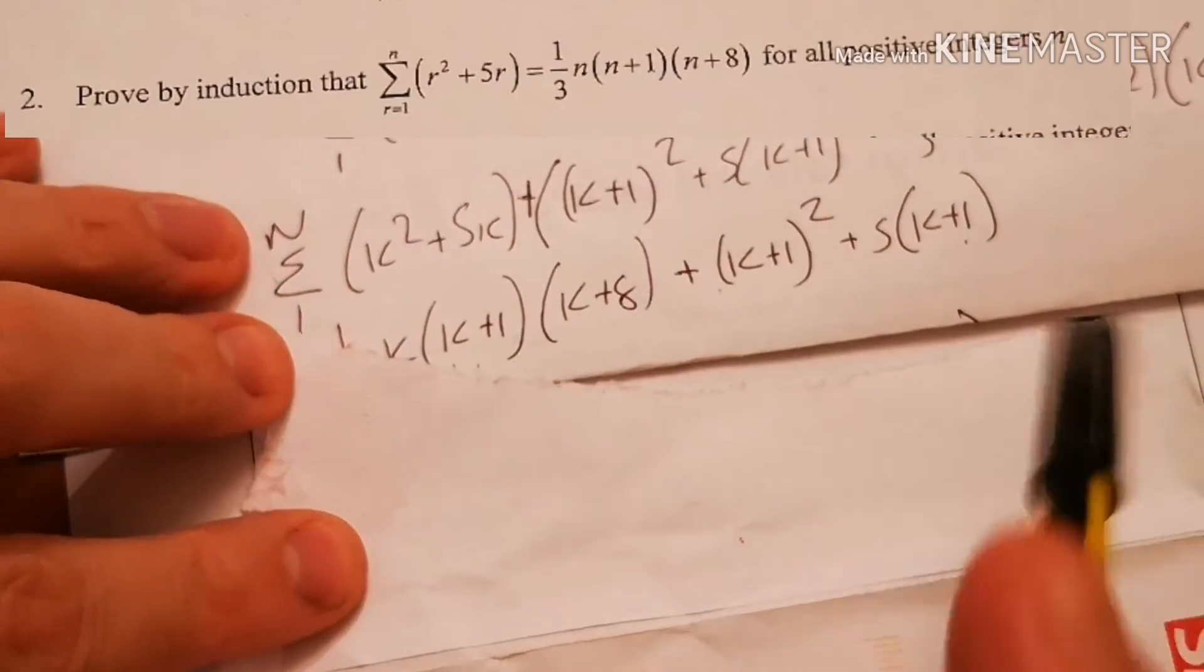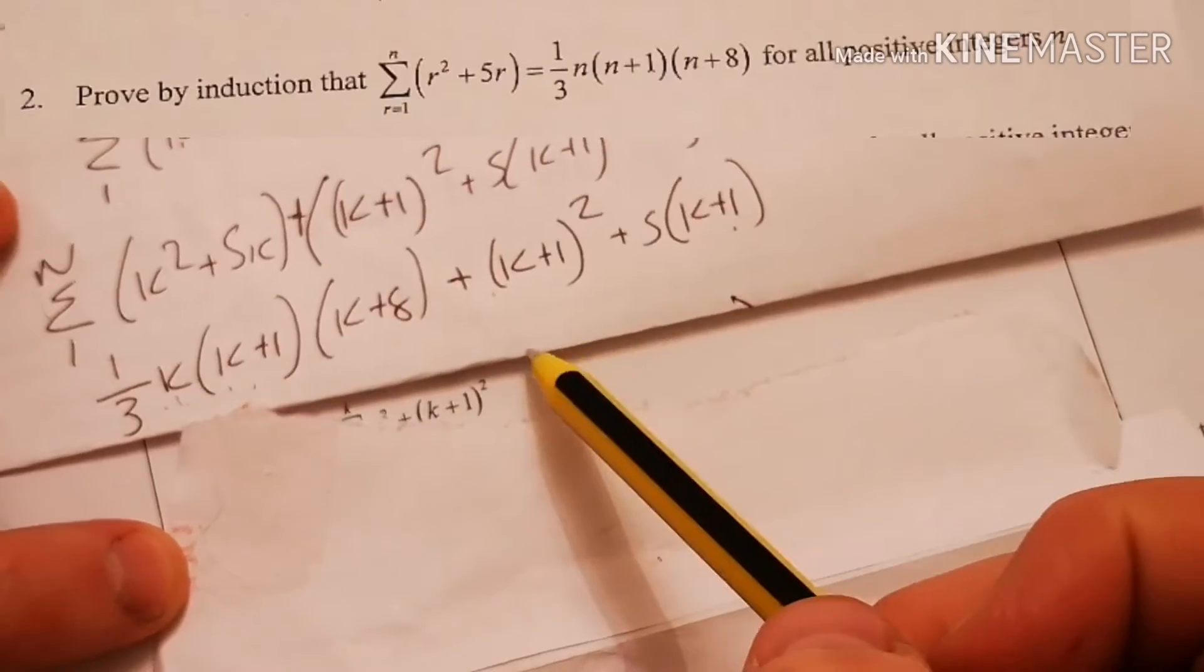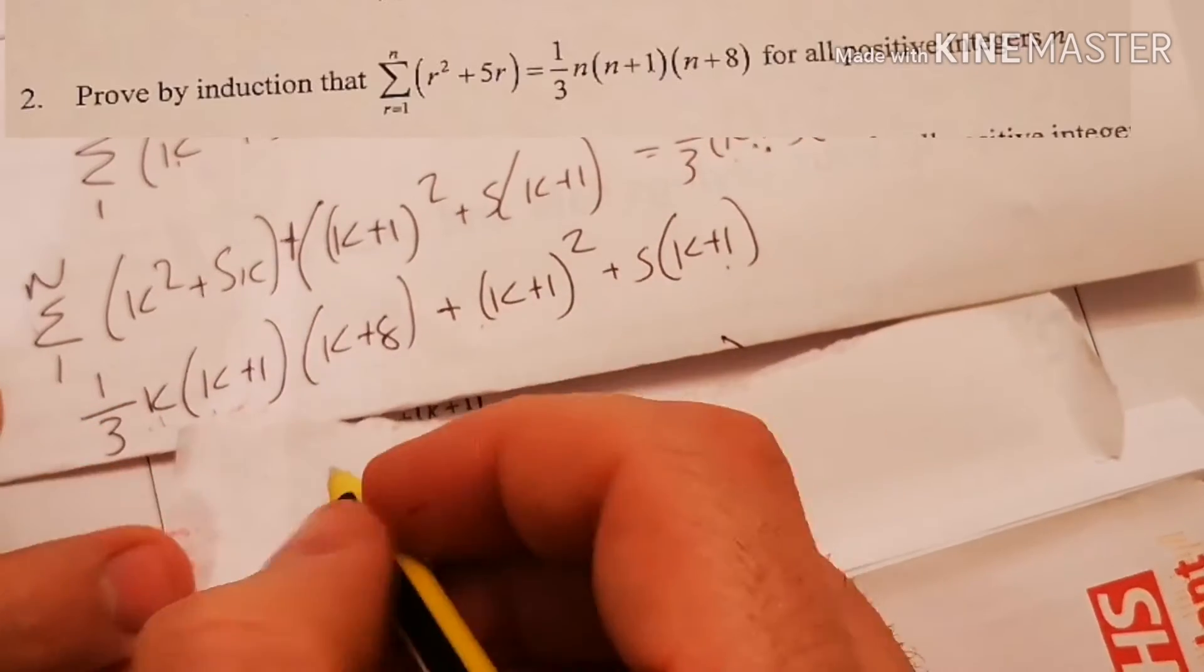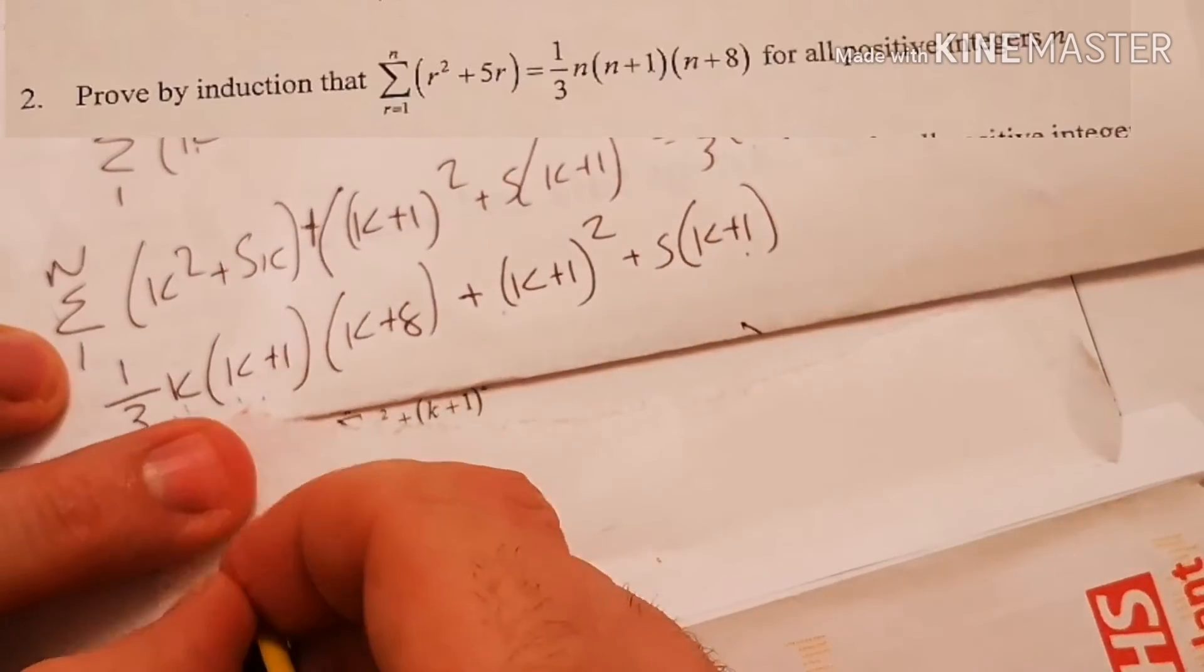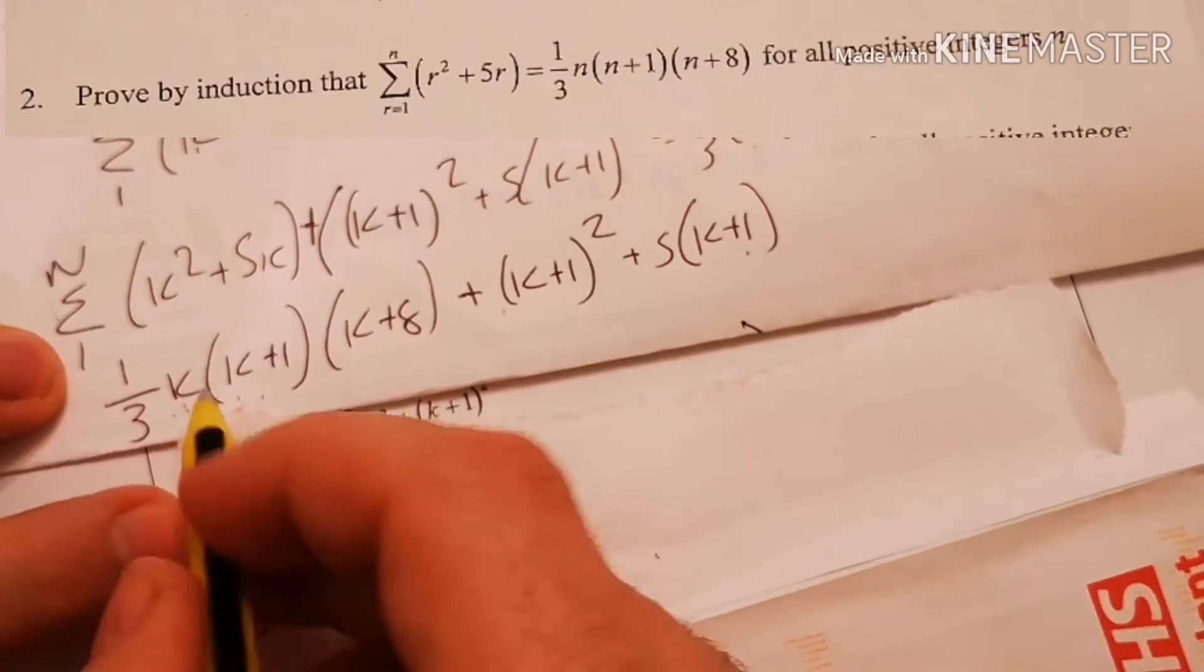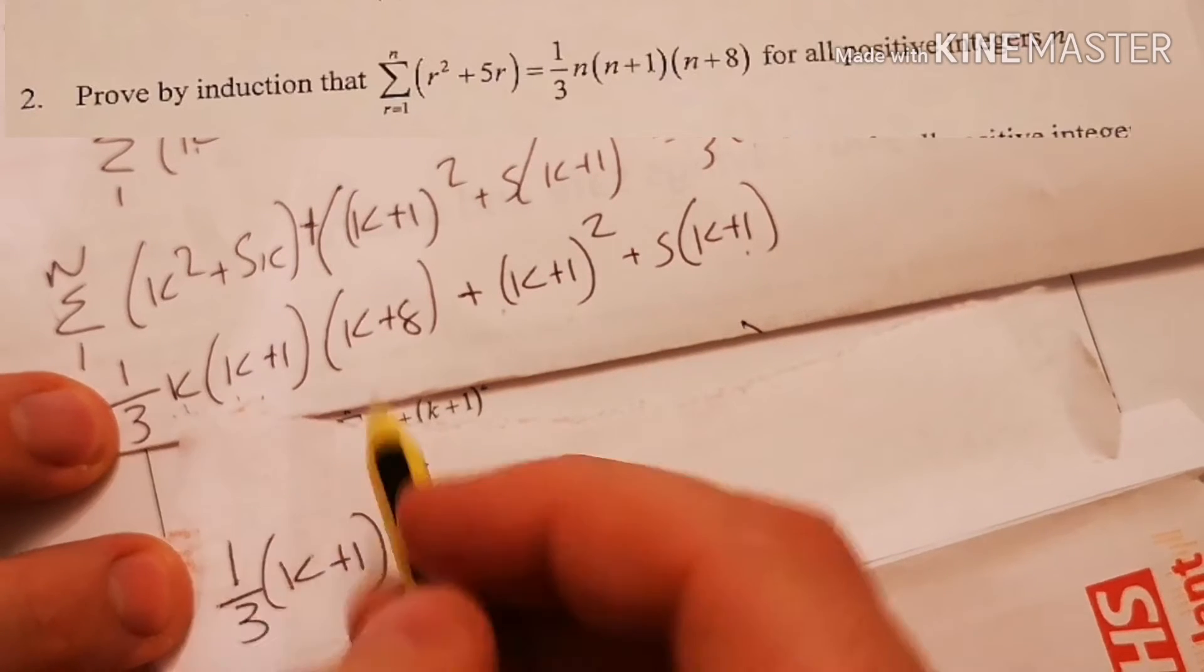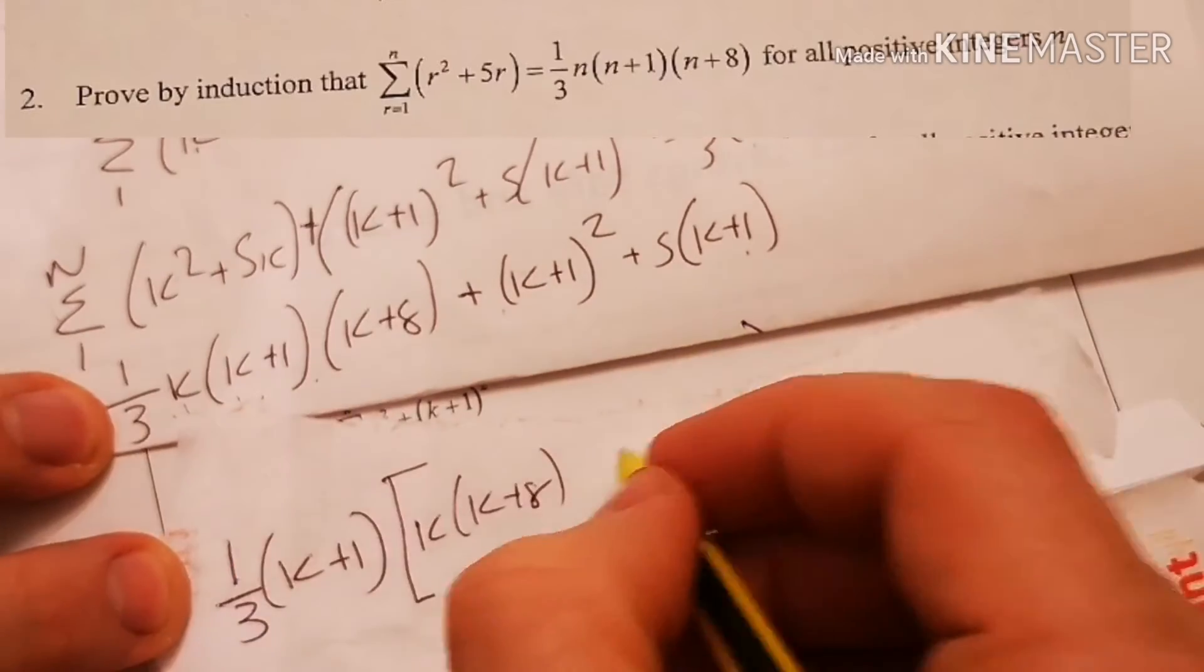So I could expand. Alright, so all I need to do is make this look like that. I could expand it all and see what happens, but I want to try and do something smart. Because I've got k plus 1 in each term, I want to try, and I've got a third, and that starts with a third k plus 1. I'm going to try and factorise that at first. I've got a third, k plus 1. Okay, now, I'm going to open it up again. Third k plus 1 times k, and k plus 8, gives me my first term.